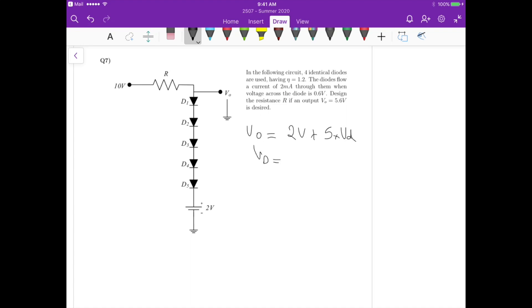Vd in this case equals Vout which is 5.6 minus 2 volts divided by 5. This gives us a value of 0.72 volts for each one of the diodes.